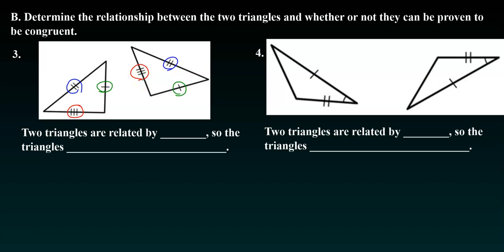So I have three sides of a triangle, and in the previous sets of videos and notes that we've taken, we found that if three sides of a triangle are congruent, then the triangles... So the statement is going to say, two triangles are related by SSS, so the triangles can be proven congruent.